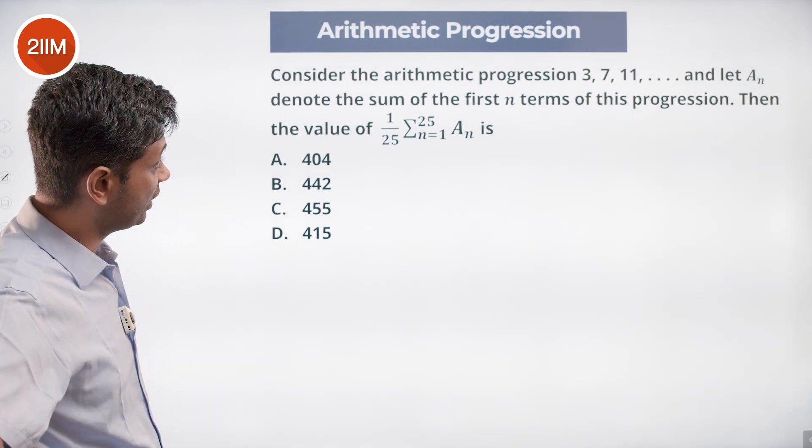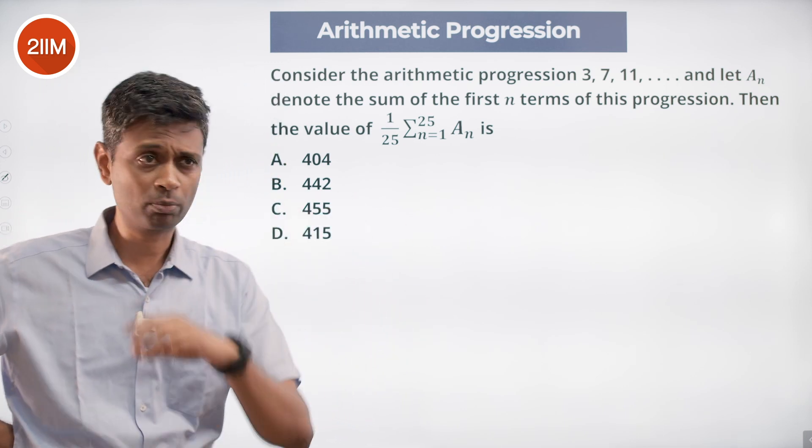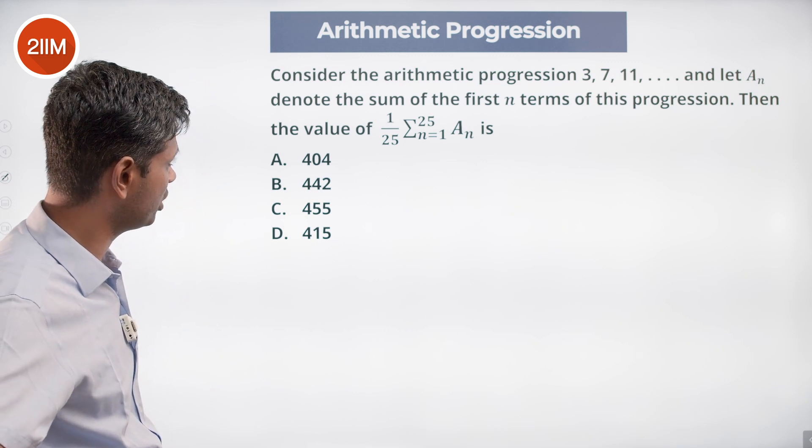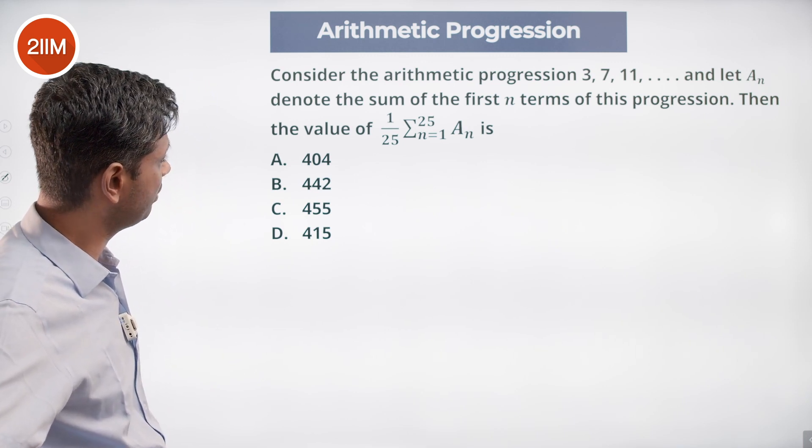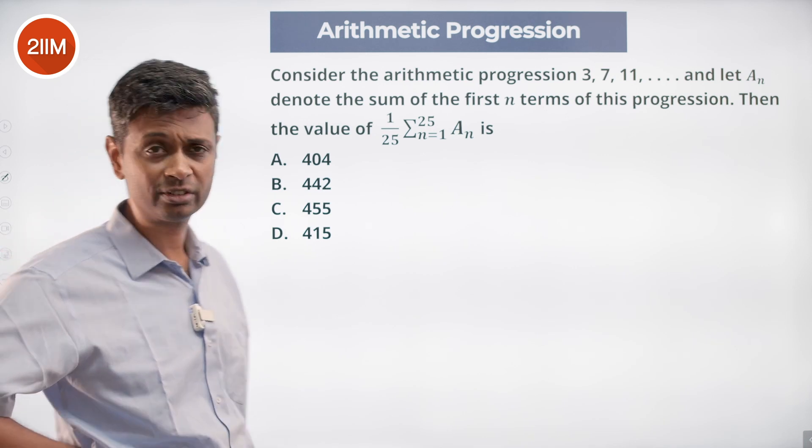Consider the arithmetic progression 3, 7, 11, 15, 19, etc., plus 4, plus 4, plus 4, and let a_n denote the sum of the first n terms of this progression. Then the value of 1/25 summation n equals 1 to 25 times a_n is...